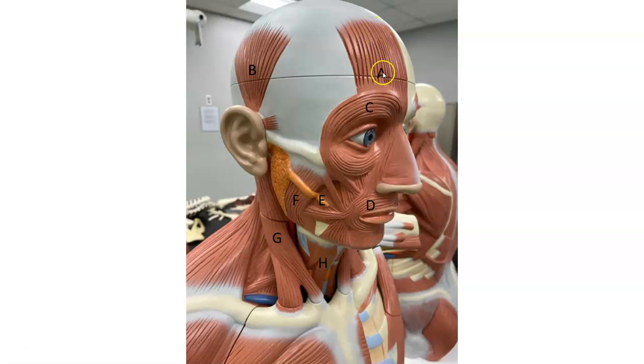A is the frontalis, right on your frontal bone. B is the temporalis, right on your temporal bone.